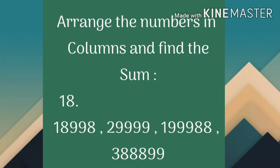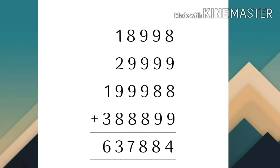Let's do question number 18. Column में arrange करके: 8+9=17, 17+8=25, 25+9=34 - 4 carry 3. 9+9=18, 18+9=27, 27+3=30, 30+8=38 - 8 carry 3. 9+9=18, 18+9=27, 27+3=30, 30+8=38 - 8 carry 3.